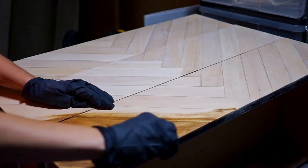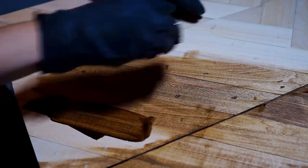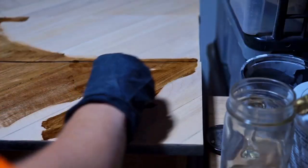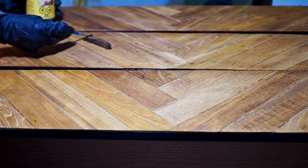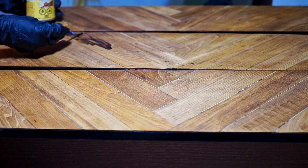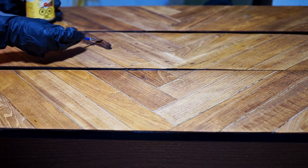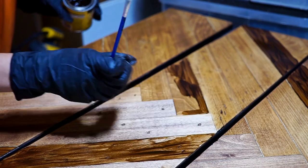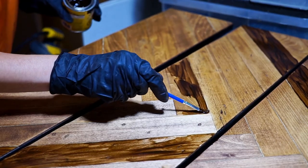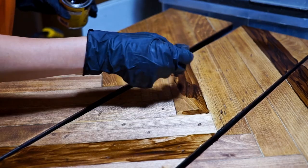I started with Minwax gel stain in the color Golden Pecan, which is one of my favorite colors. I stained all planks and then I picked some random planks and added a second coat of stain. I used different types: the same Golden Pecan, Dark Walnut, and Walnut. I wanted to enhance the contrast of different types of wood. I wanted the pattern to look uneven, to have this kind of rustic look.